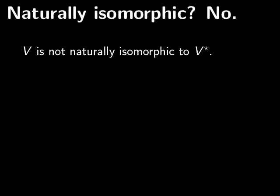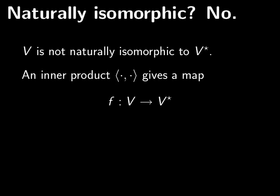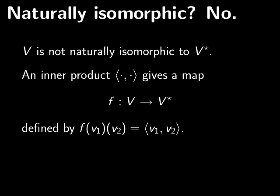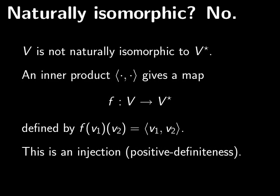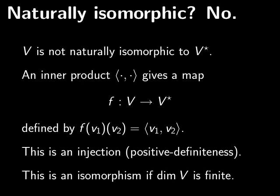Any two N-dimensional vector spaces are isomorphic, but just because they're isomorphic doesn't mean the isomorphism is natural. In fact, V star is not naturally isomorphic to V. On the other hand, if somebody gives you an inner product, then you can get a map from V to V star. Here's how: given a vector V1, f(V1) is a linear functional that takes a vector V2 and returns the inner product of V1 and V2. This map is linear and injective because the inner product is positive definite, and it's an isomorphism provided the dimension of V is finite.